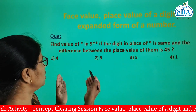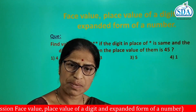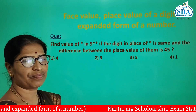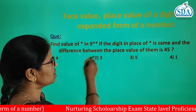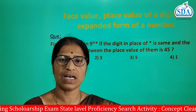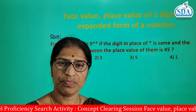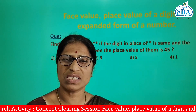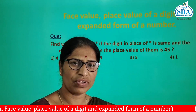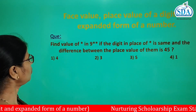Now there is a question of the type asked in the scholarship exam on this topic. The question is: find the value of the star in the number 9★★, if the digit in the place of each star is the same and the difference between the place values of the digit is 45. Try to solve the question — you can pause the video while solving. Now let us try.